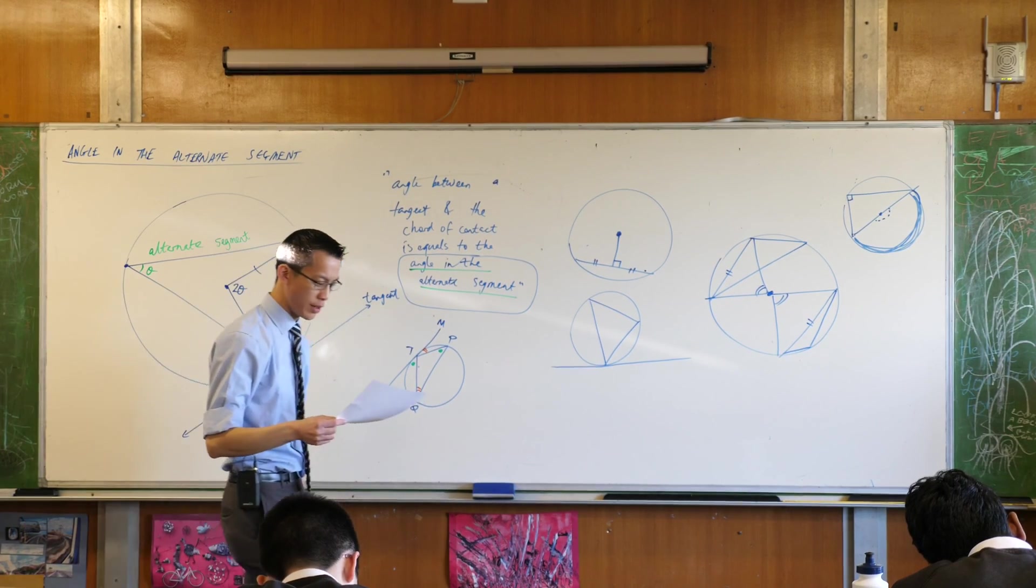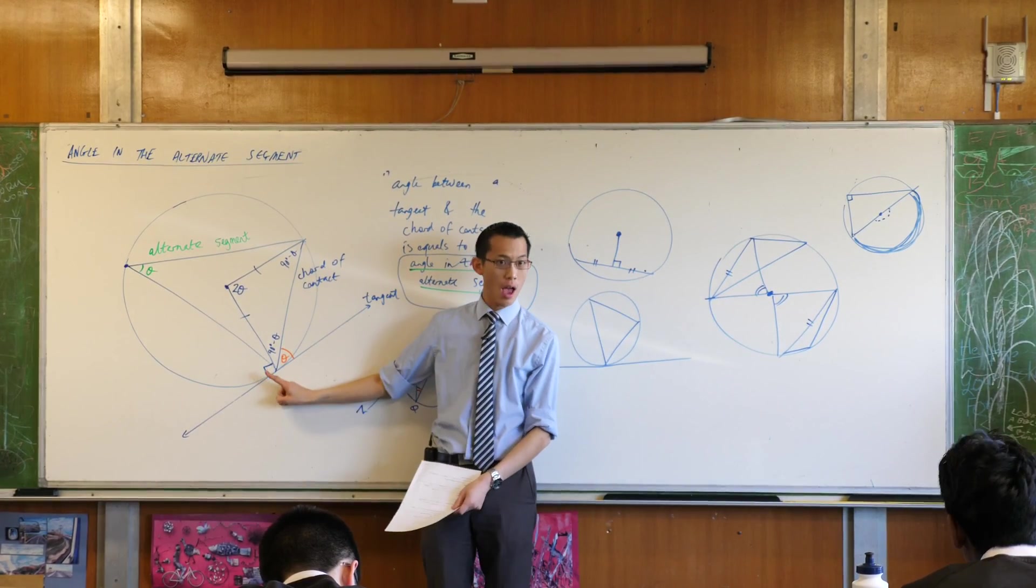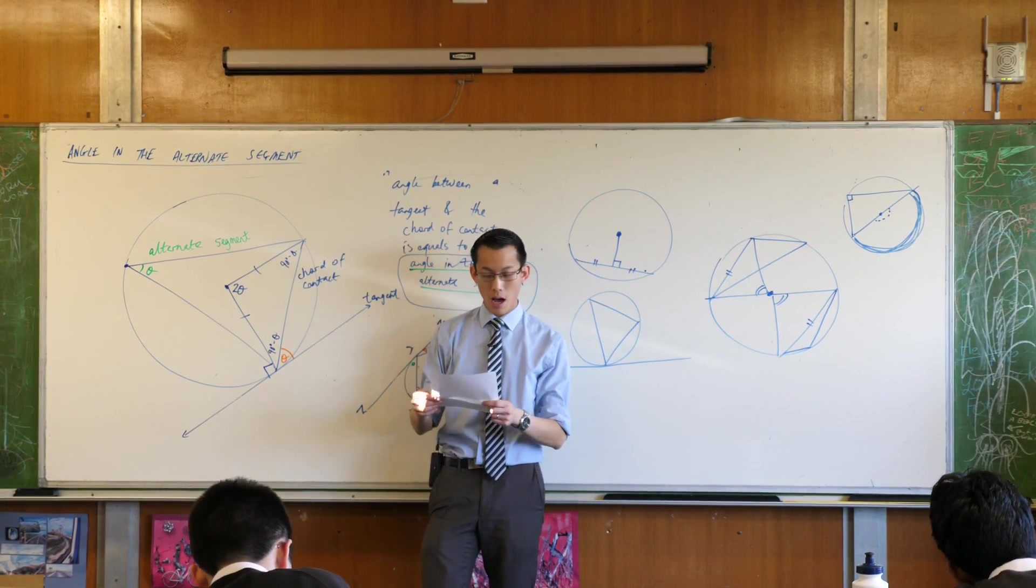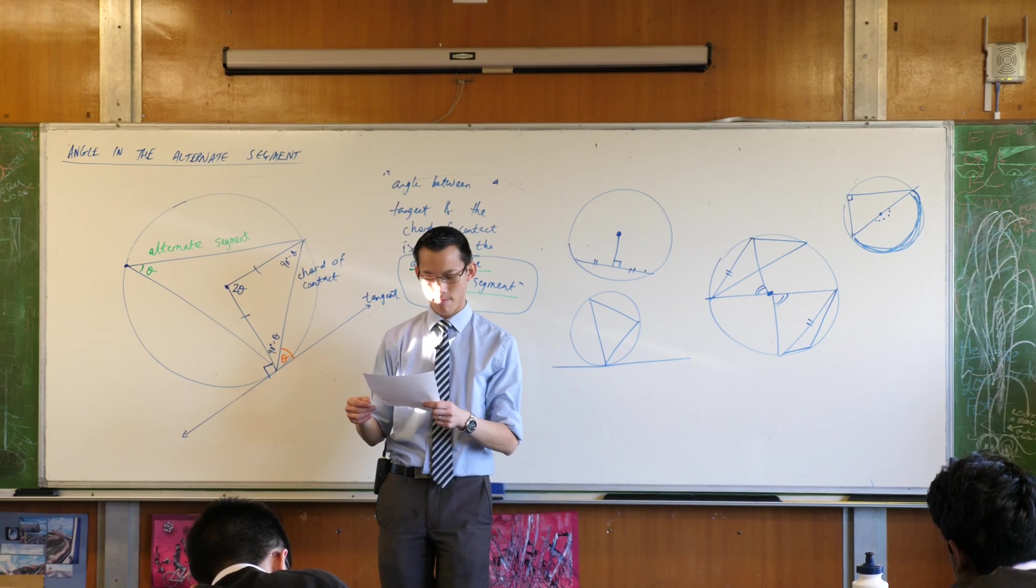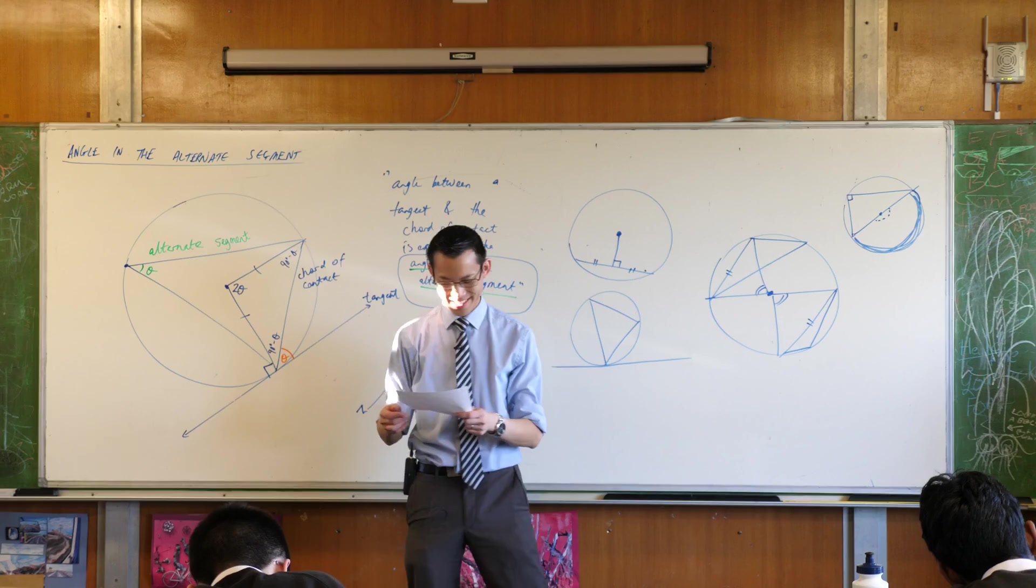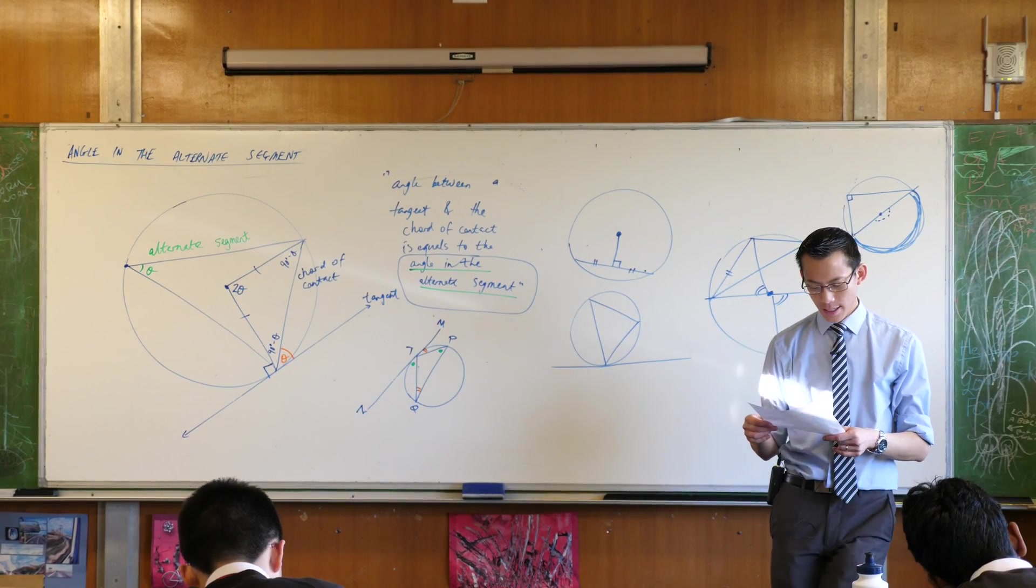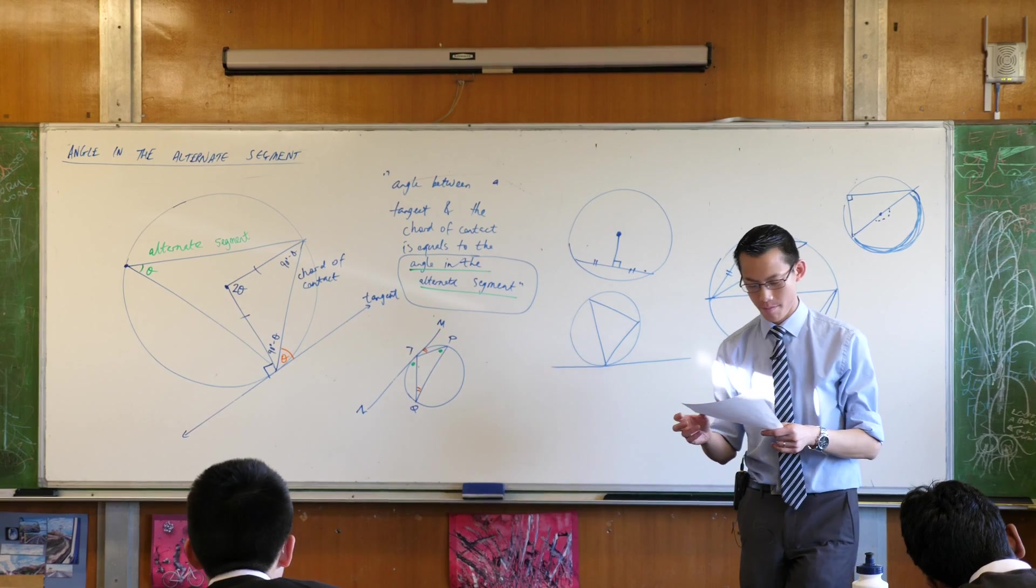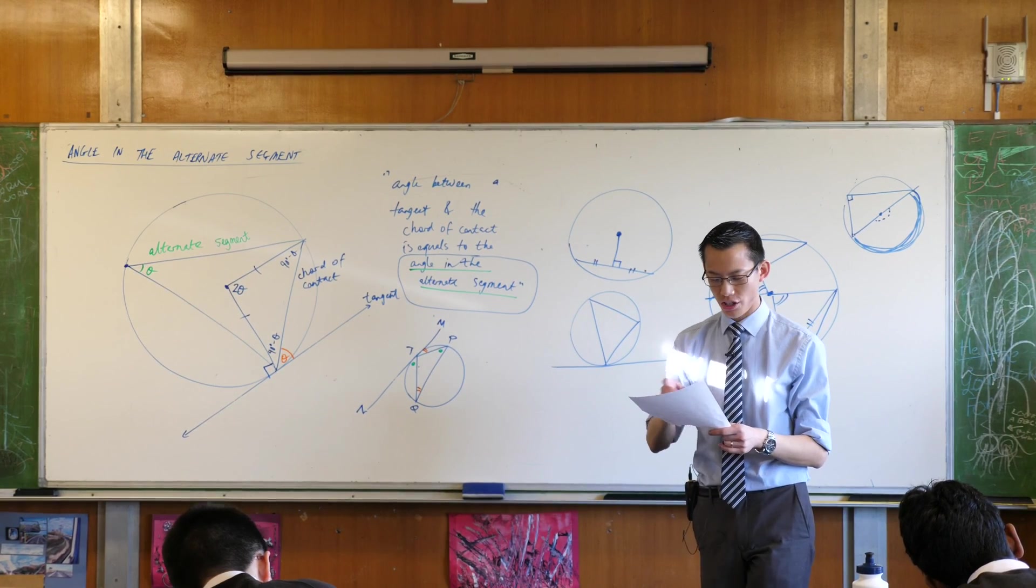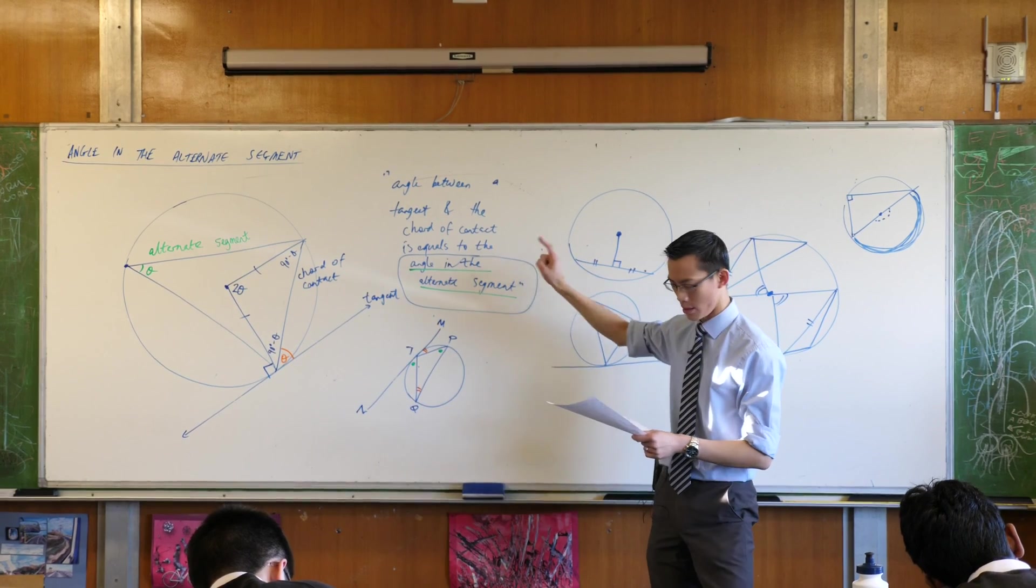Tangents. We did these fairly recently. A tangent is... We use this one. A tangent is perpendicular to the... What's it perpendicular to? It's perpendicular to the radius drawn from its point of contact or at its point of contact. And then we just did 10. The angle between a tangent and the chord of contact is equal to the angle in the alternate segment.